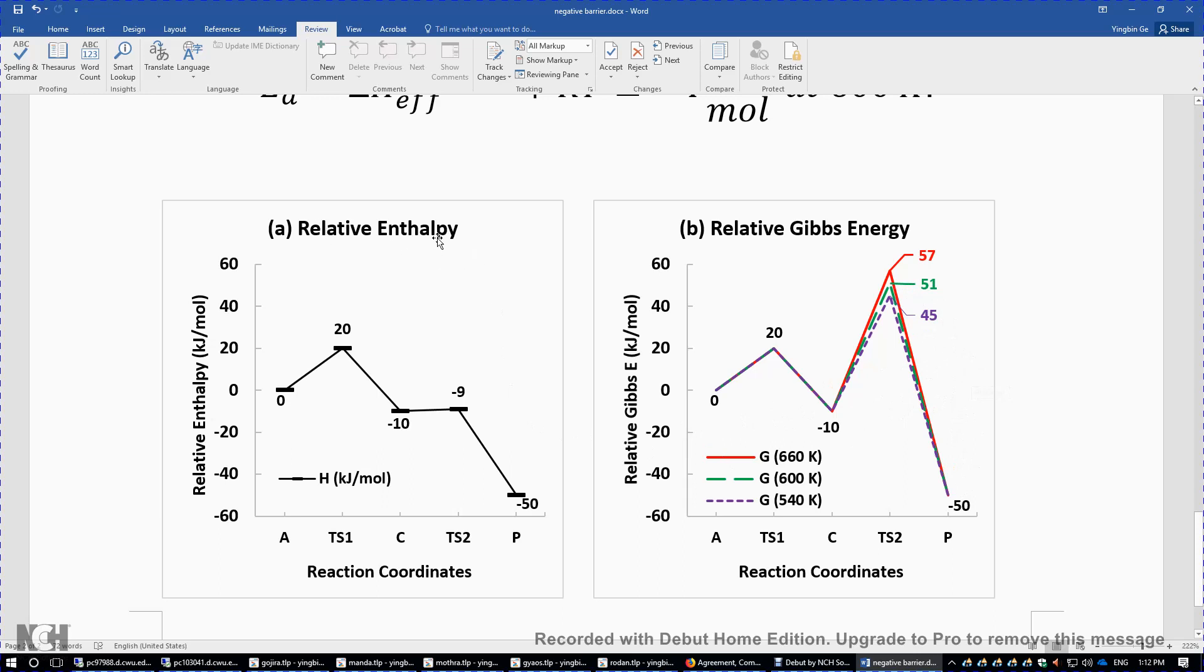The second condition is, if you look at the relative enthalpy, the enthalpy of the second transition state must be lower than the enthalpy of reactant A. Only if both conditions are satisfied will we be able to observe a negative energy barrier and a negative enthalpy of activation.